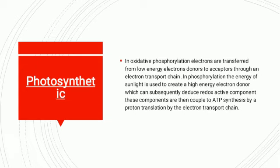In photosynthetic phosphorylation, electrons are transferred from low-energy electron donors to acceptors through an electron transport chain. The energy of sunlight is used to create a high-energy electron donor, which can subsequently drive redox active components. These components are then coupled to ATP synthesis via proton translocation by the electron transport chain. This concludes our discussion on the electron transport chain. Thanks for watching the video.